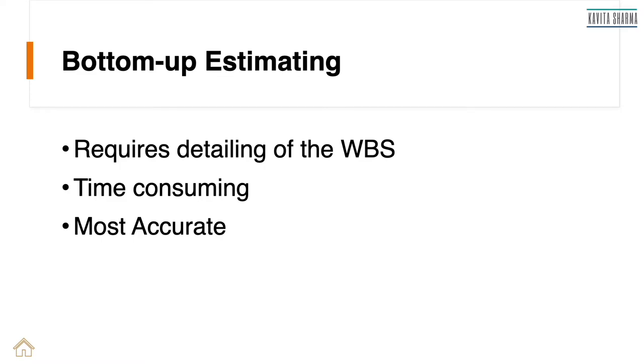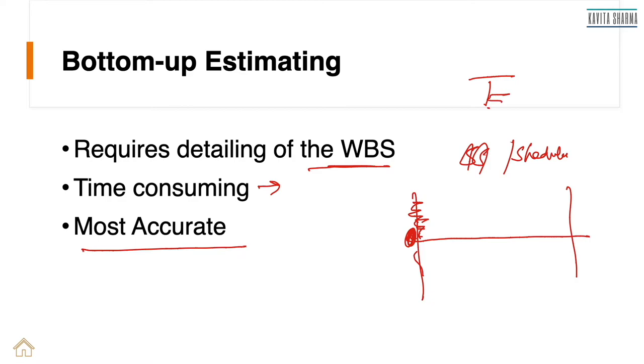Bottom up estimate is extreme opposite. You're putting in a lot of effort to detail down the WBS. It is time consuming, but it becomes very accurate. When do you want to do it? When you are starting off with a phase, at the starting of the phase, you would want to look at each WBS item. You're going to be planning for this middle of phase, overall cost or overall schedule. At this point of time, you work with your team and elaborate the WBS and say, okay, these are the points. What are the risk items? Who's going to be doing it? What is the total cost and so on? And you arrive at a good estimate at the start of the phase.